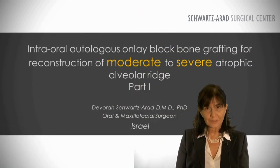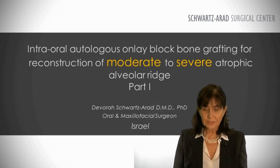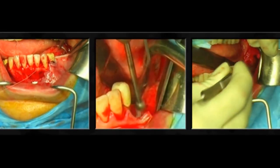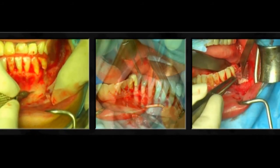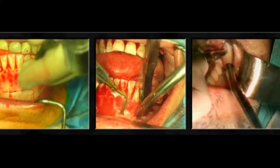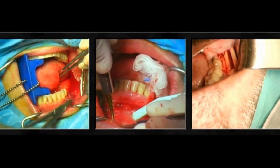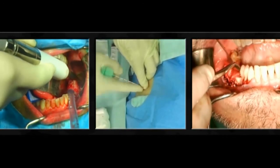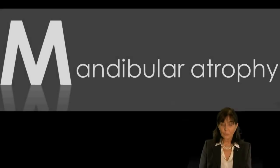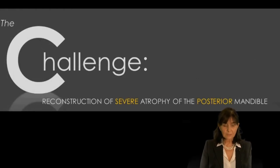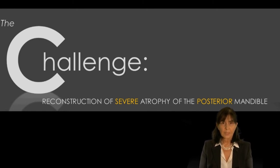Today's topic will be on intraoral autologous block bone grafting for reconstruction of moderate to severe atrophic alveolar ridge. Part 1 will deal with mandibular atrophy reconstruction, concentrating on severe atrophy of the posterior mandible.